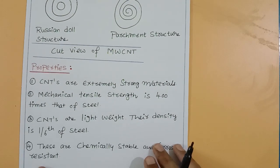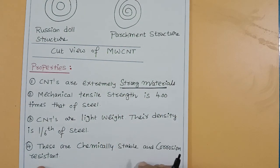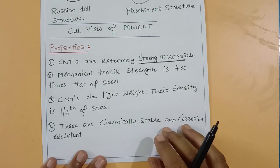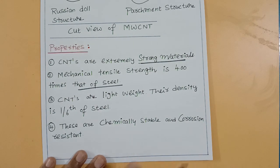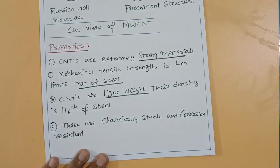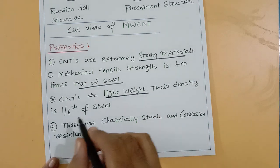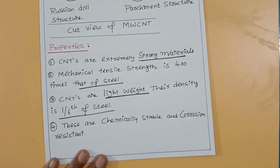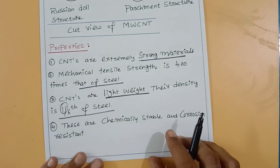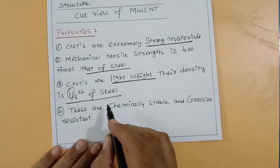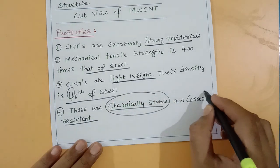Properties of carbon nanotubes: carbon nanotubes are extremely strong materials. Their mechanical tensile strength is about 400 times that of steel. Carbon nanotubes are also very light in weight — their density is one-sixth that of steel. So they combine great strength with very low weight.